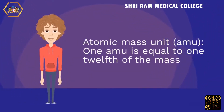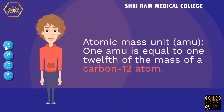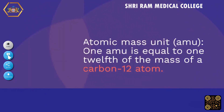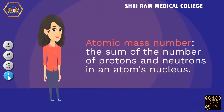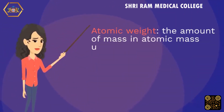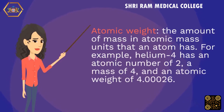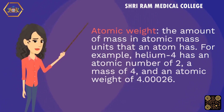Atomic mass unit (amu): one amu is equal to one twelfth of the mass of a carbon-12 atom. Atomic mass number: the sum of the numbers of protons and neutrons in an atom's nucleus. Atomic weight: the amount of mass in atomic mass units that an atom has. For example, helium-4 has an atomic number of 2, a mass of 4, and an atomic weight of 4.00026.